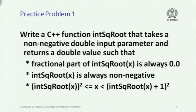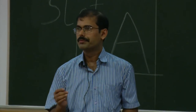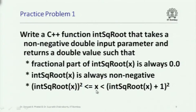You are required to write a C++ function called int_sqrt. It takes a non-negative double input parameter and returns a double value such that the fractional part of whatever it returns is always 0. Whatever it returns is always going to be non-negative. And if you call this function with x, then the value it returns will satisfy: result squared ≤ x, and (result + 1) squared > x.